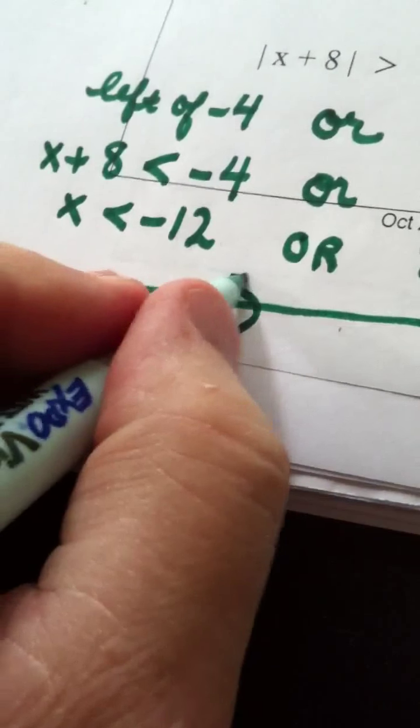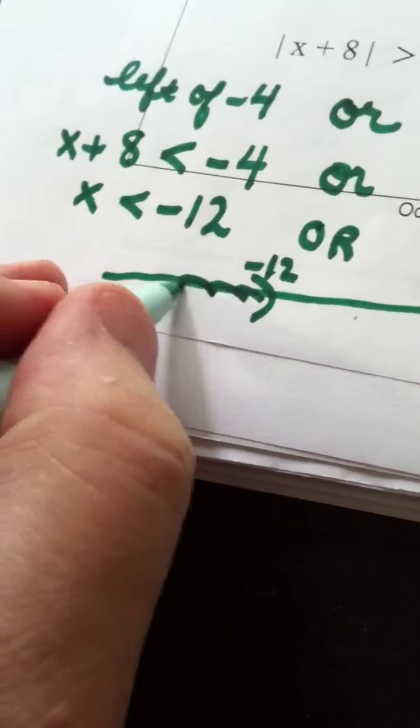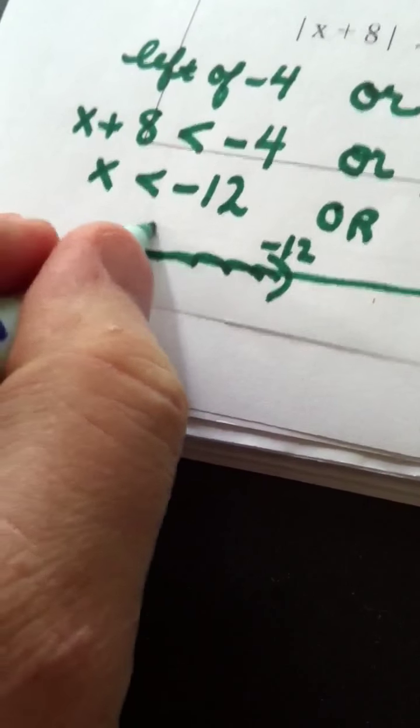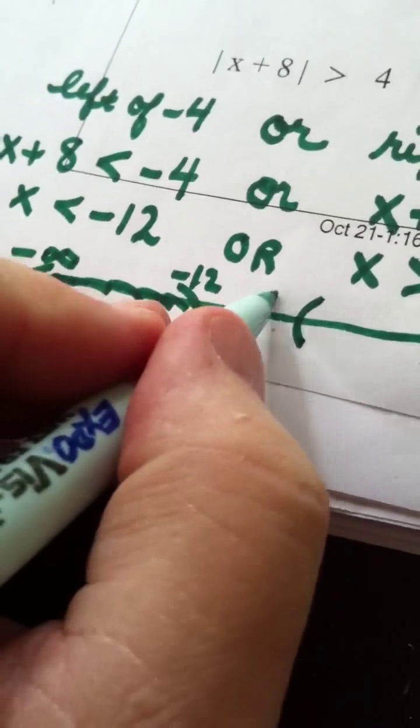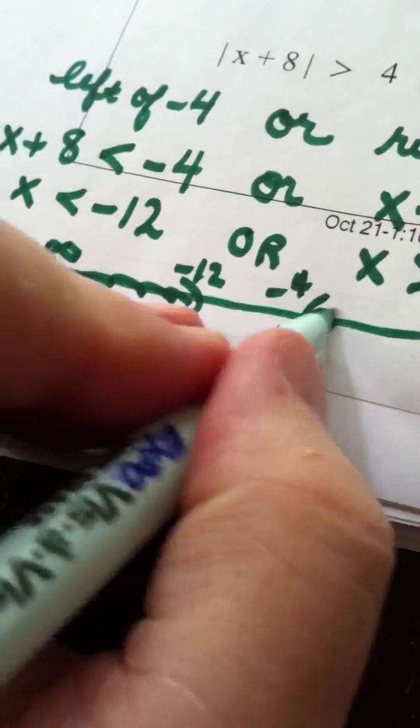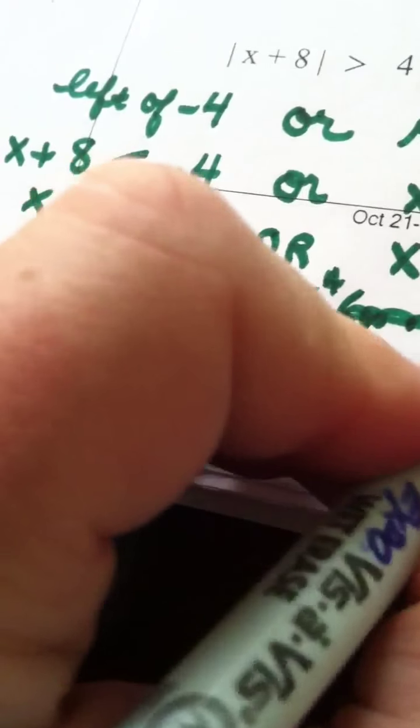So, if I drew that, I would have all real numbers less than negative 12. This is heading off to negative infinity. I would have all real numbers greater than negative 4, heading off to positive infinity.